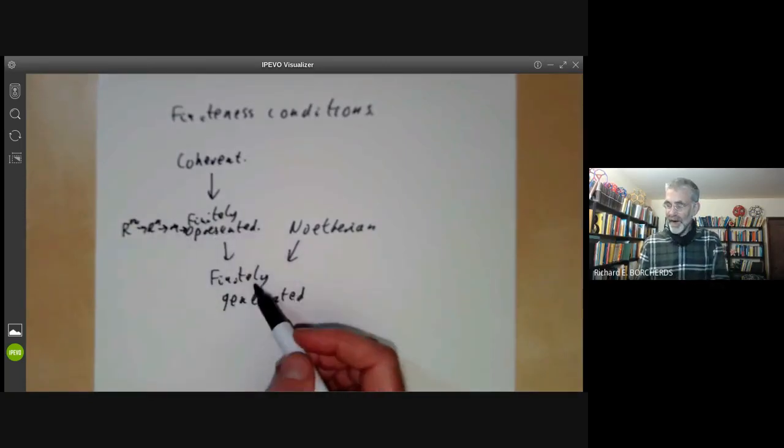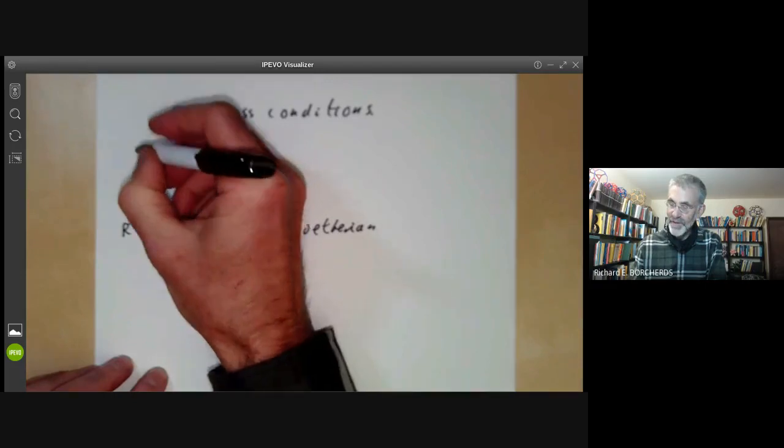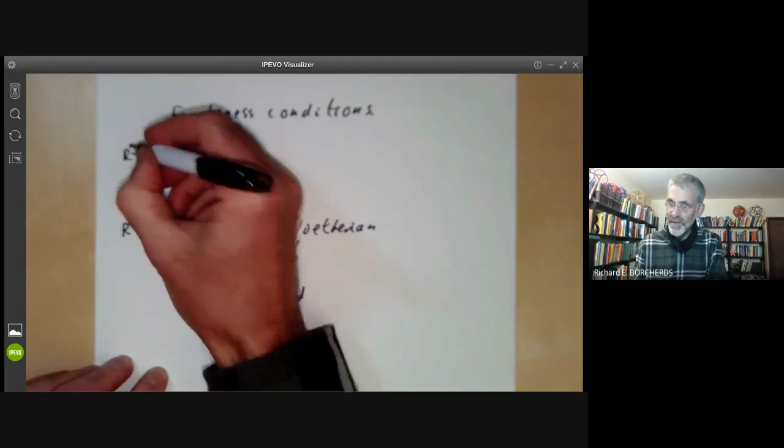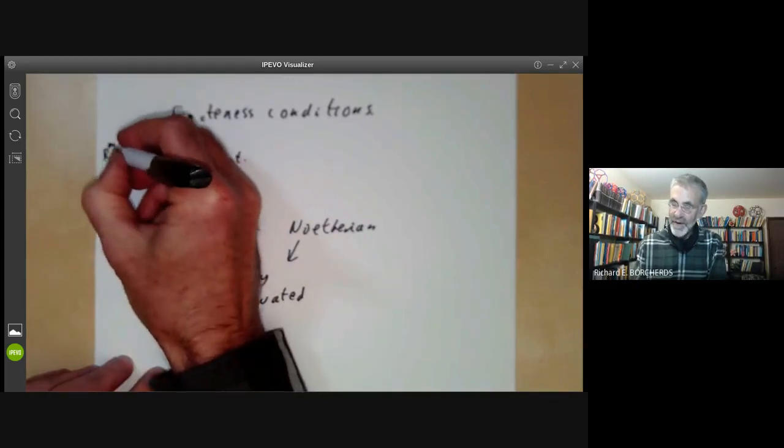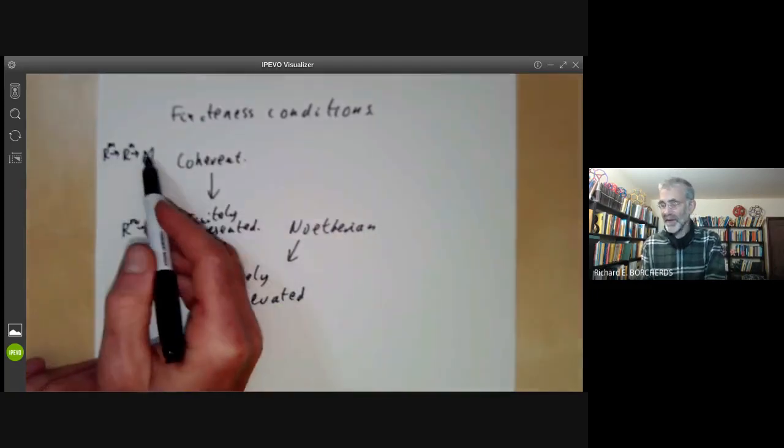Coherent means a module is finitely generated and it means that the module has the extra condition that if you've got a finitely generated free module mapping to M, then the kernel of this map is also finitely generated. So this map here doesn't have to be onto.